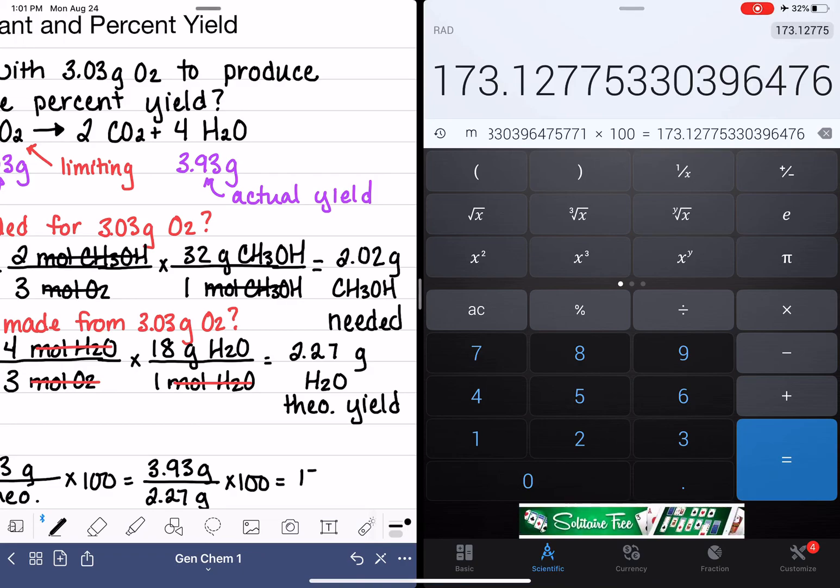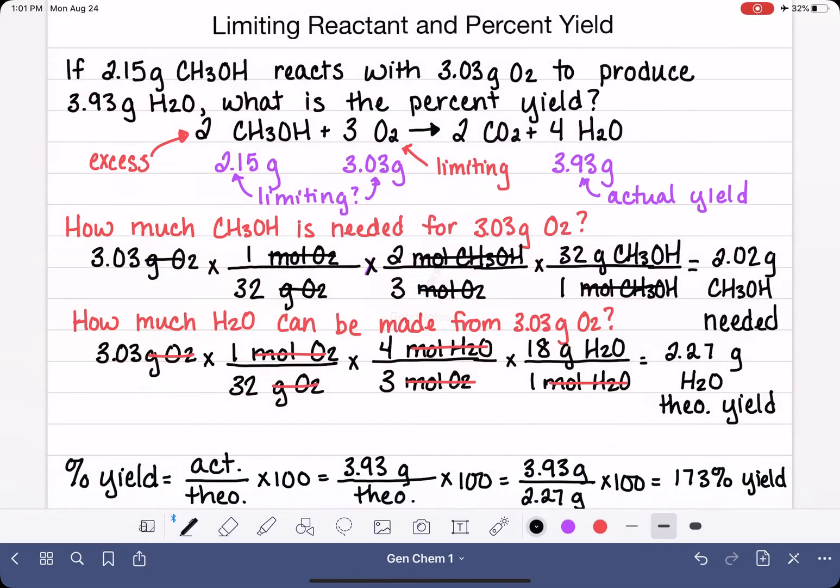Her percent yield is 173%. So what does this mean, in terms of words? This means that this particular reaction synthesized more than 100% of what we would expect of water. This is not a good thing from the perspective of chemistry. It isn't possible to make more than the theoretically calculated maximum amount.